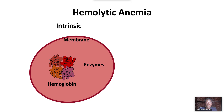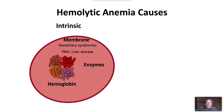Deficiency or dysfunction of membrane proteins includes hereditary syndromes such as hereditary spherocytosis, hereditary elliptocytosis, hereditary ovalocytosis, and hereditary stomatocytosis. Acquired membrane abnormalities are caused by paroxysmal nocturnal hemoglobinuria or induced by liver disease.